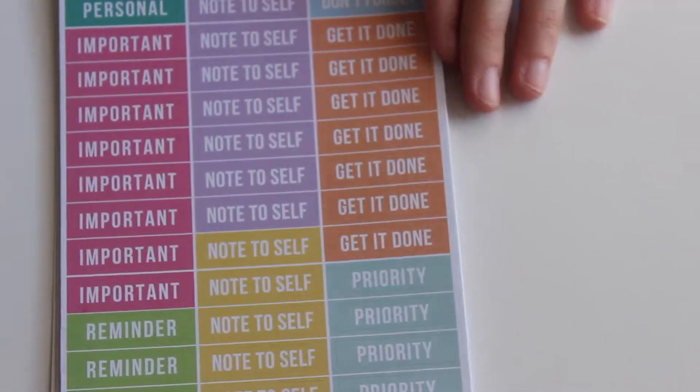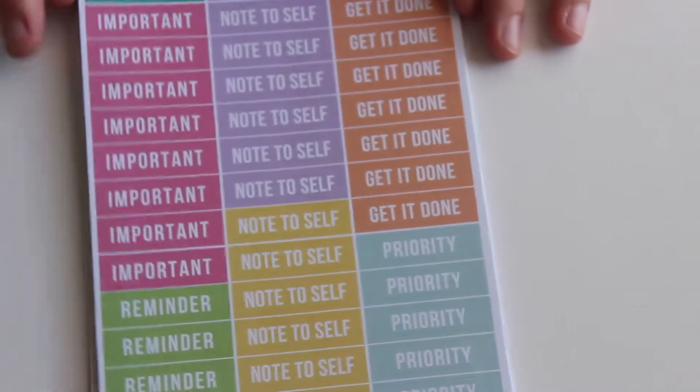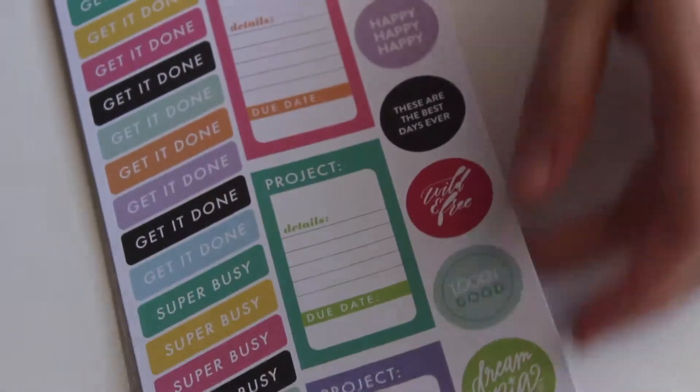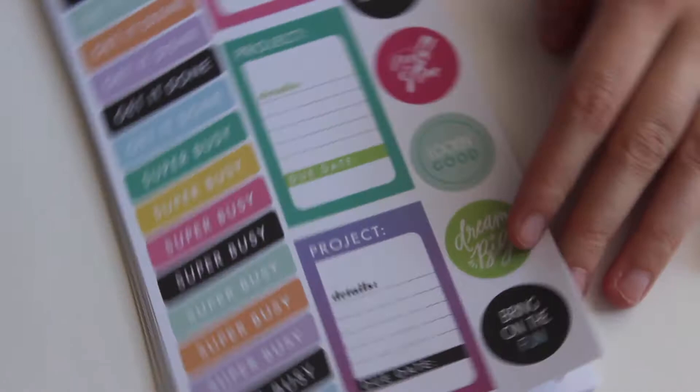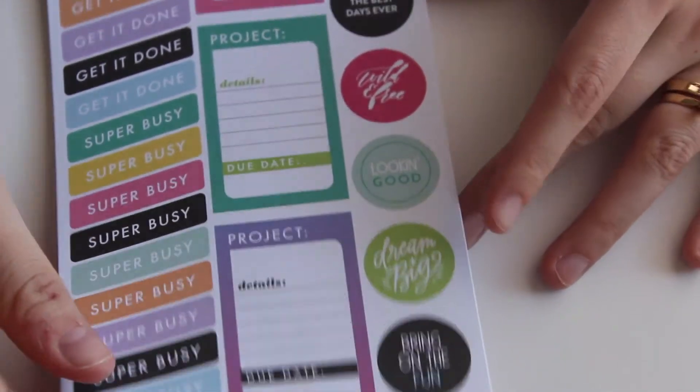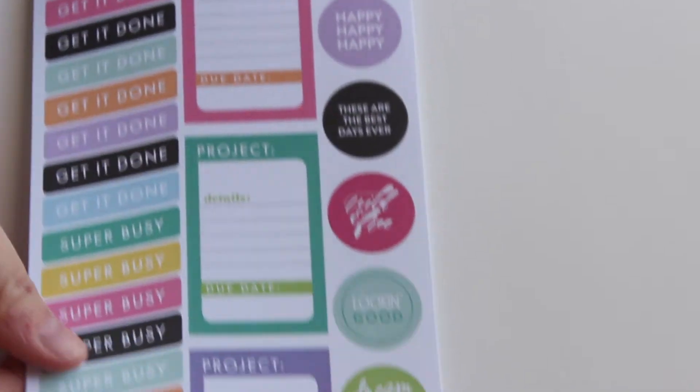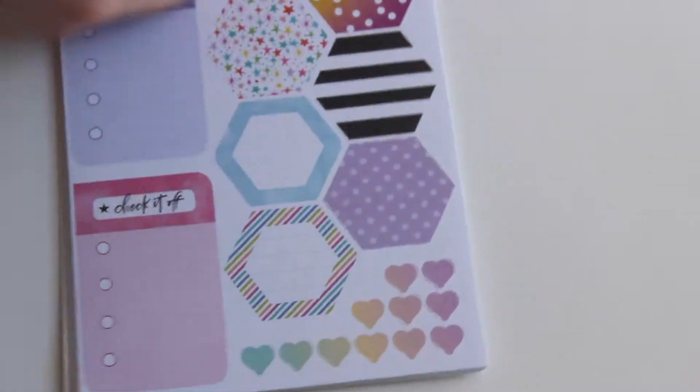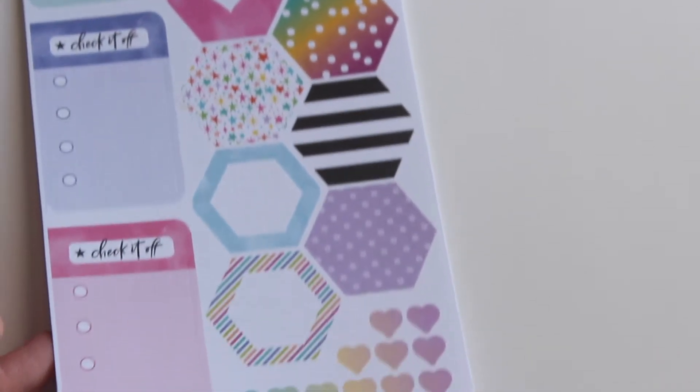And these are the same just with white print versus the gold foil. Little project stickers. And these say get it done and super busy. More little cute hexagon stickers. Lots of to do stickers, that's really good to have.